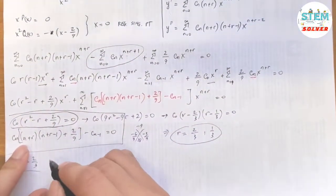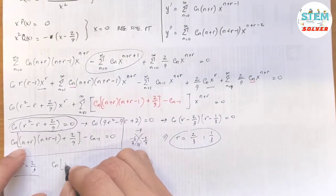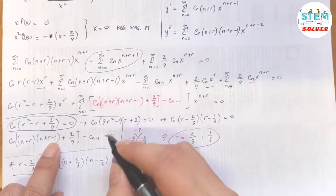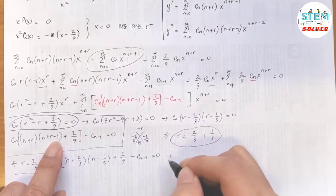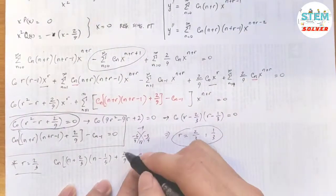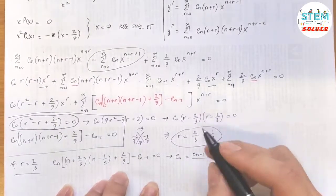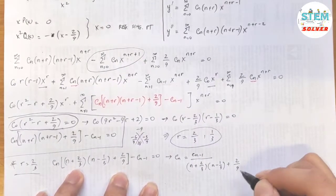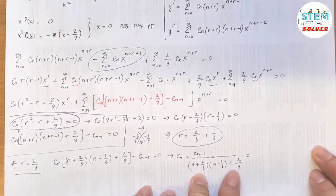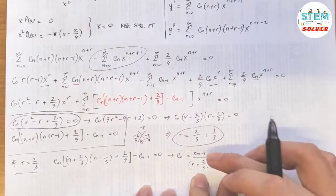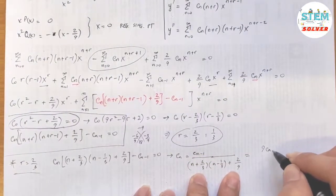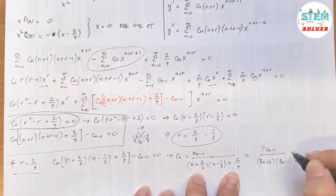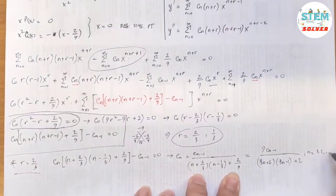For the case r equals 2/3, substituting into the recurrence relation gives c_n times [(n plus 2/3)(n plus 2/3 minus 1) plus 2/9] minus c_{n minus 1} equals 0. Multiplying through by 9 and simplifying, the recurrence becomes c_n equals 9 c_{n minus 1} over (3n plus 2)(3n minus 1), for n starting from 1. When n equals 1, we get c_1 equals 9c_0 over (5 times 8... simplified) and when n equals 2 we compute c_2.